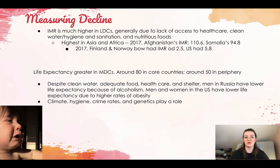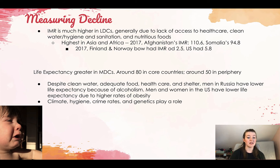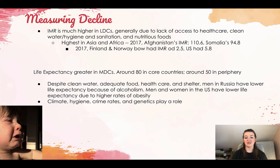IMR is way higher in LDCs, generally due to lack of access to healthcare, clean water, hygiene and sanitation, and nutritious foods. In 2017, Afghanistan's IMR was 110.6 per 1,000 live births — about one in every ten babies dies in their first year of life. Somalia's was 94.8. By contrast, Finland and Norway both had an IMR of 2.5, and the US had one of 5.8 — actually quite high for a highly developed country.